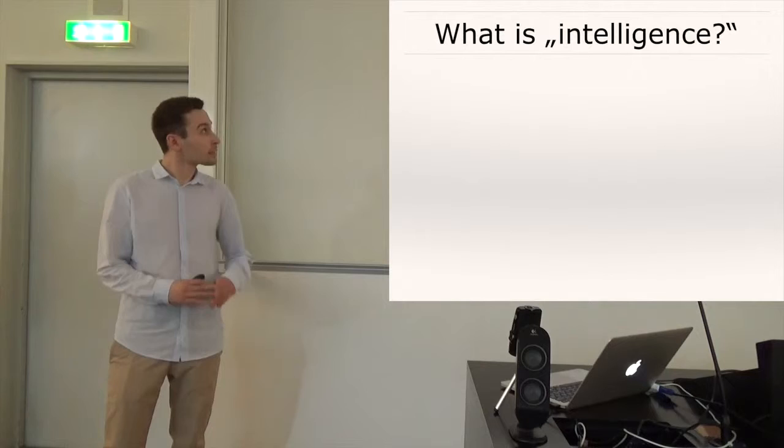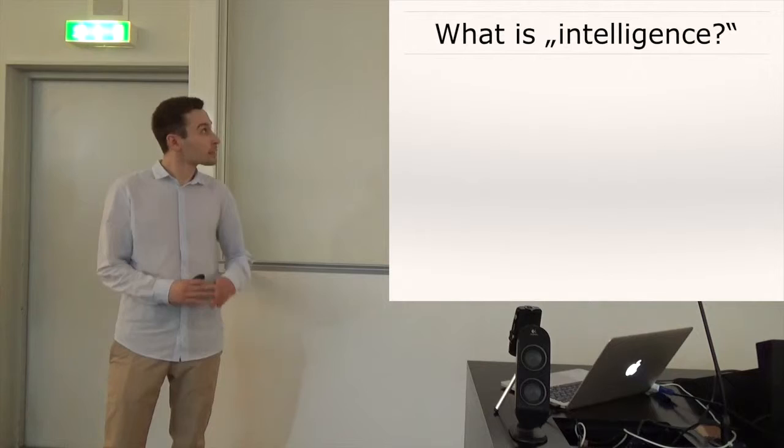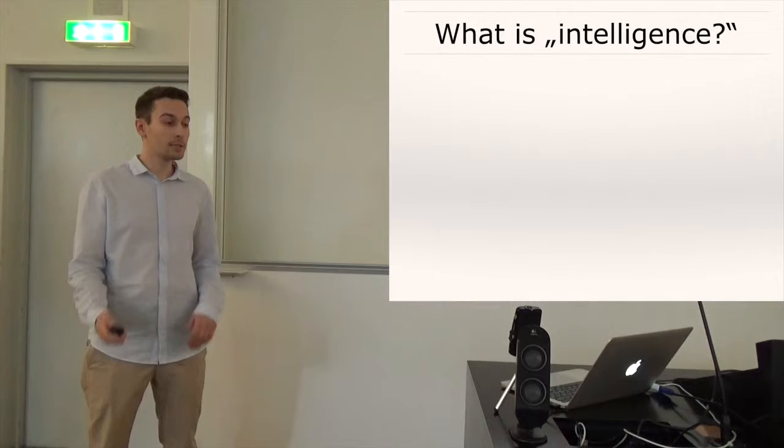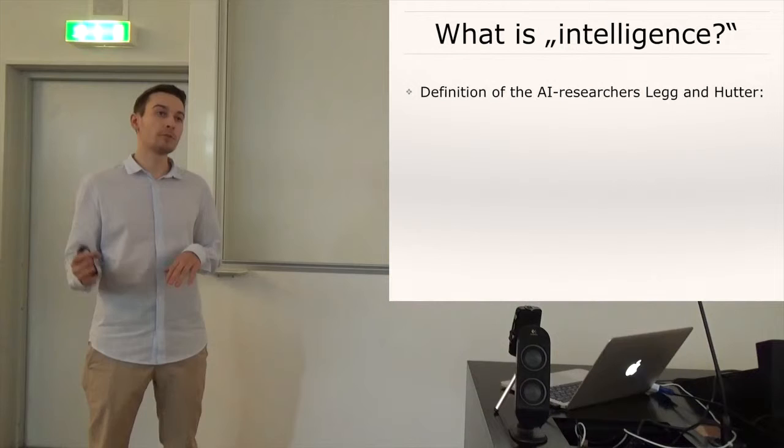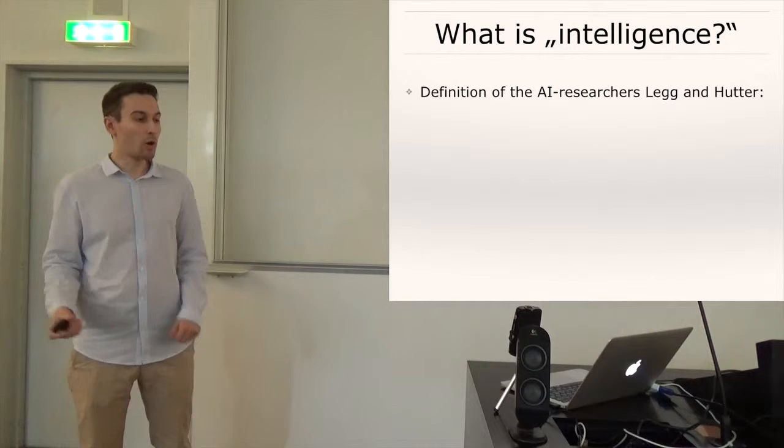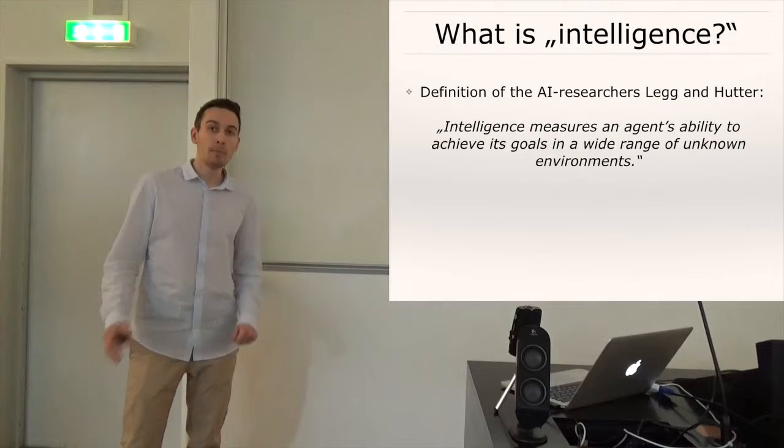So at first we have to define what we actually mean or what I mean by intelligence in this talk. And I will just use the definition by the AI researchers Shane Legg and Marcus Hutter. And here they went over over 70 different definitions of intelligence and just extracted the most common features that were common to basically all of those definitions. And they arrived at the following definition, intelligence measures an agent's ability to achieve its goals in a wide range of unknown environments.